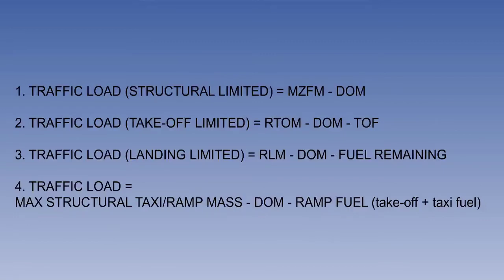Before we can determine the underload, we have to first calculate the limiting allowable traffic load. Four formulas are used, and the lowest of the four solutions — structural, take-off, landing traffic load, and taxi ramp mass — will be the allowable limit. The four formulas on screen must be learnt and recalled when required. Note the fourth will only be limiting if the taxi fuel is greater than the difference between the maximum structural ramp mass and the maximum structural take-off mass.